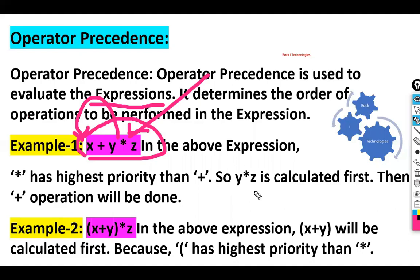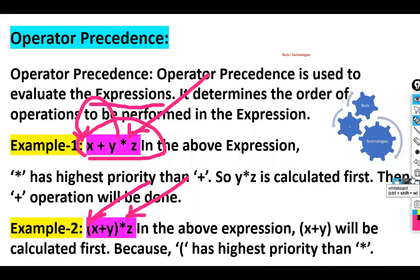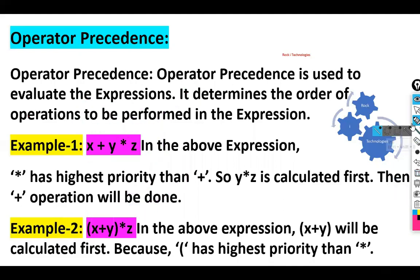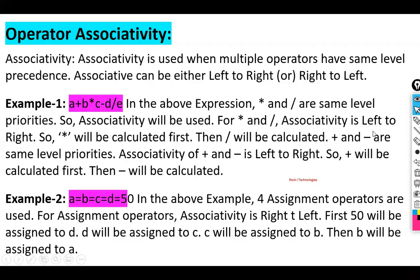In example two, we are using brackets. Because brackets have the highest precedence, the expression inside the brackets is evaluated first, and then multiplication is performed. This demonstrates operator precedence with brackets.